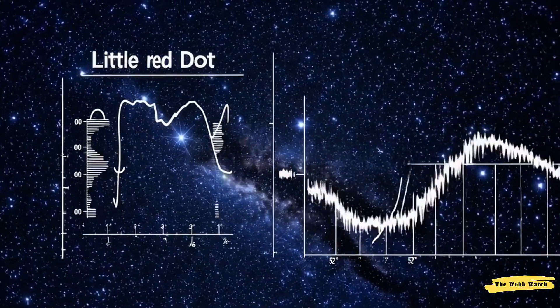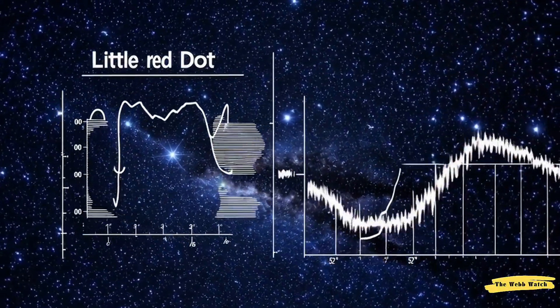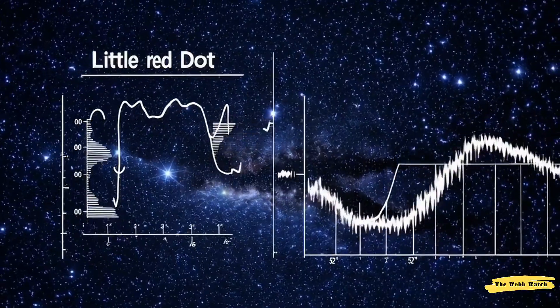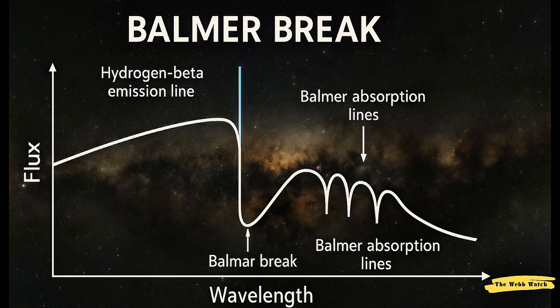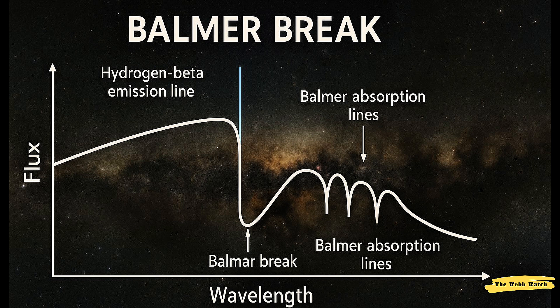Webb's spectral data revealed a strong, broad H-beta emission line, alongside other Balmer lines and absorption, plus a distinctive V-shaped Balmer break—features that don't match ordinary galaxies.